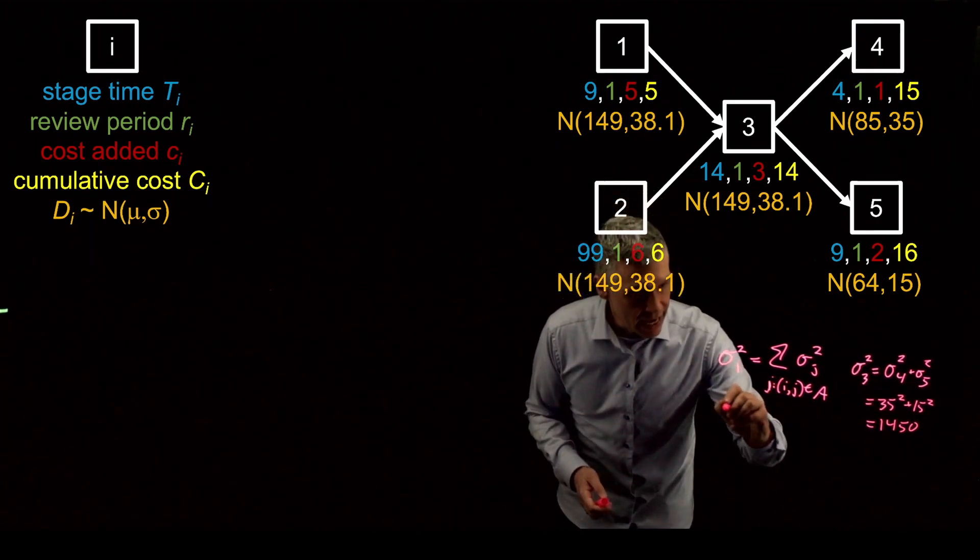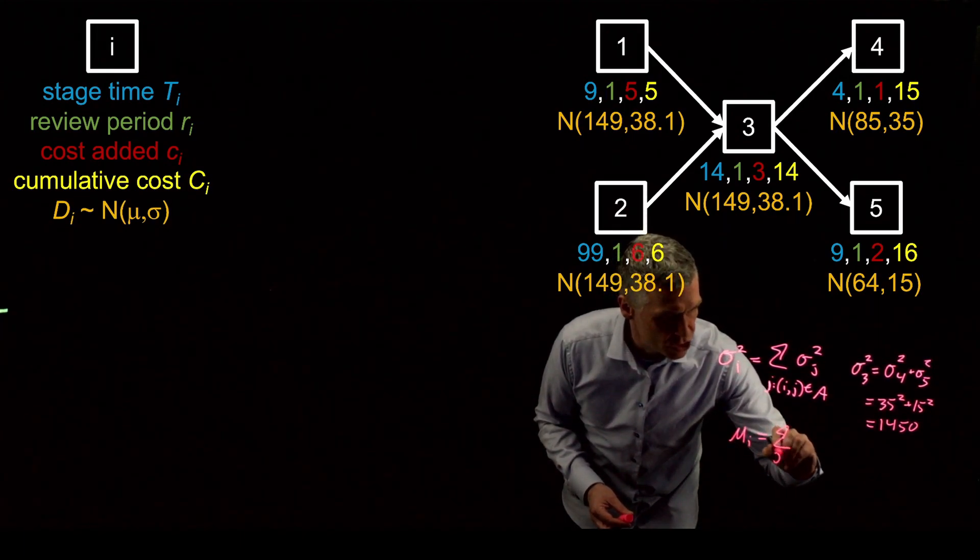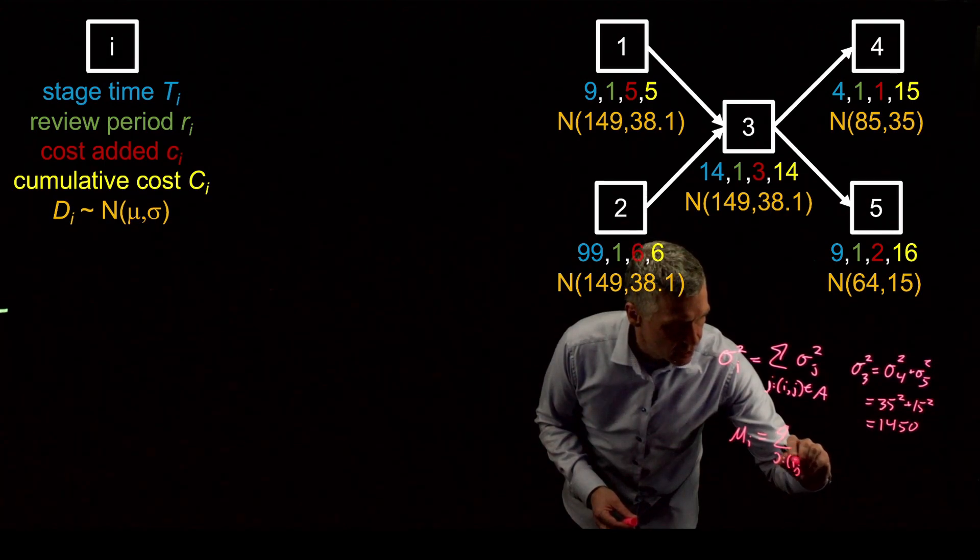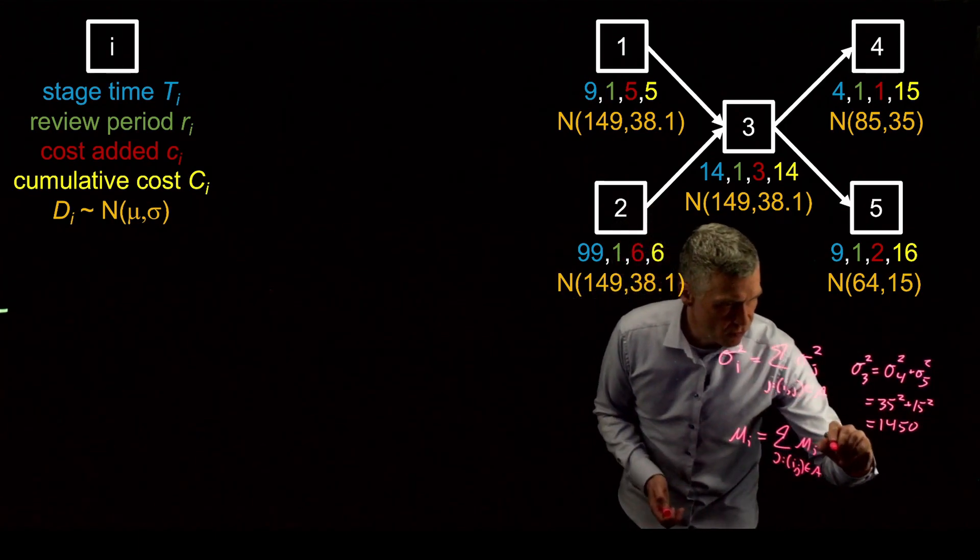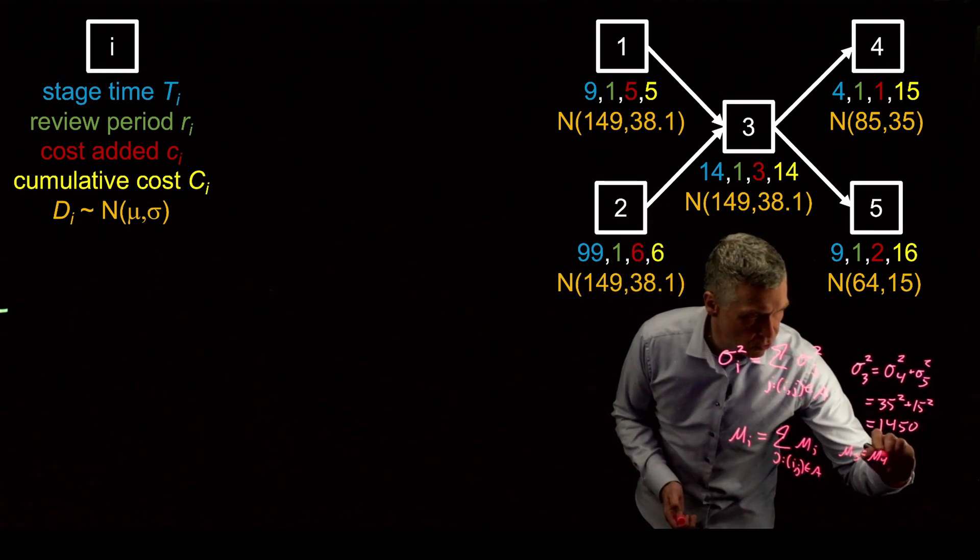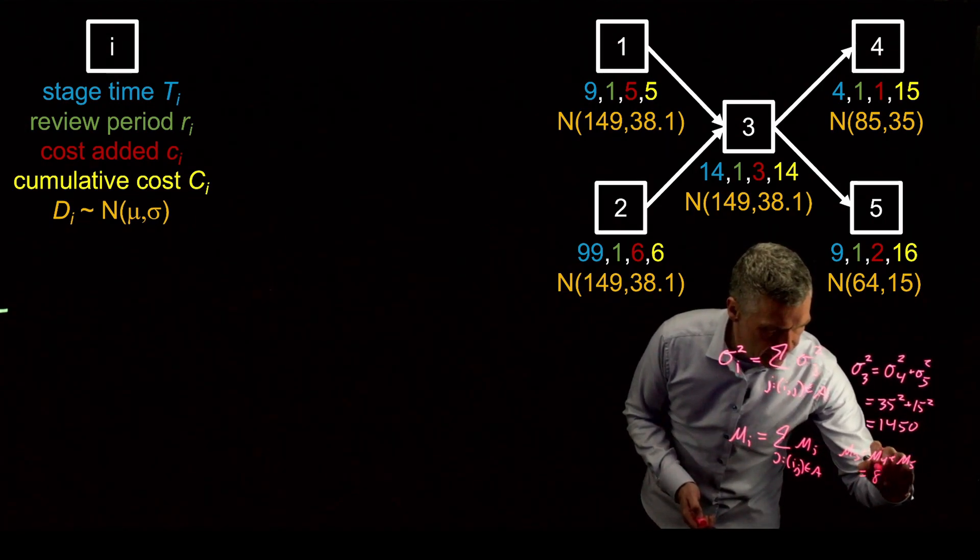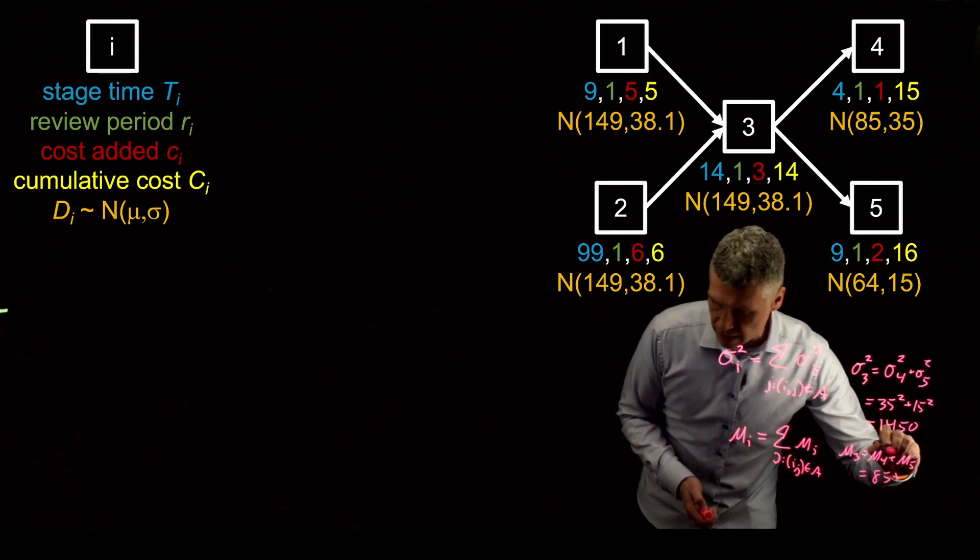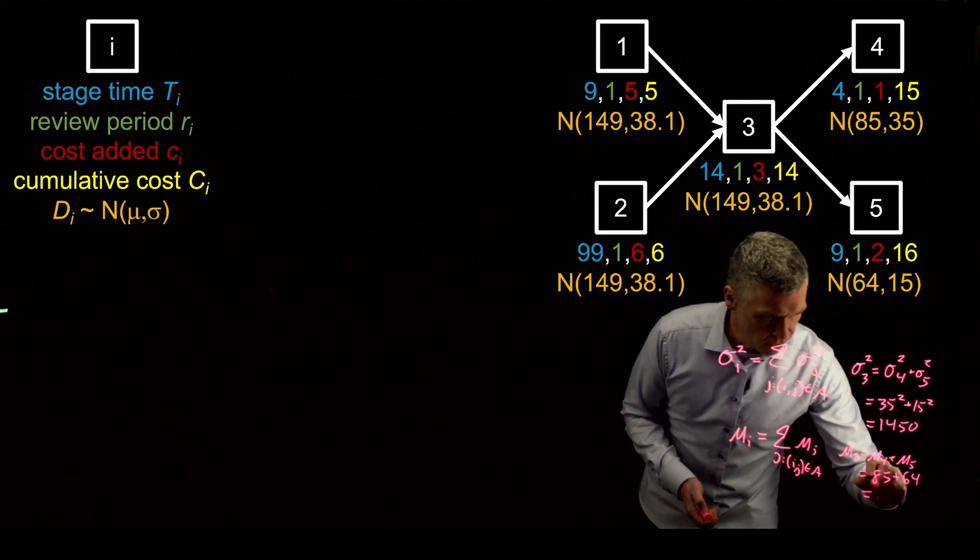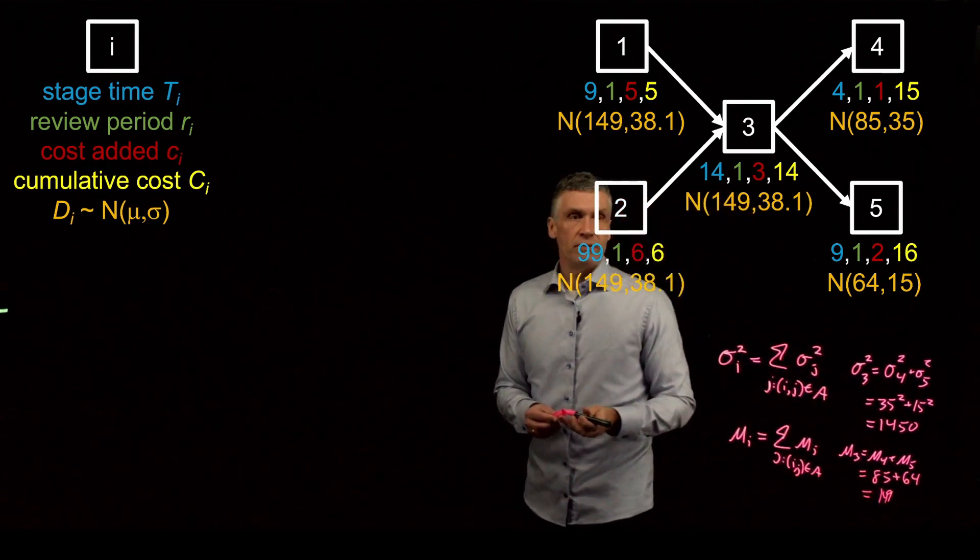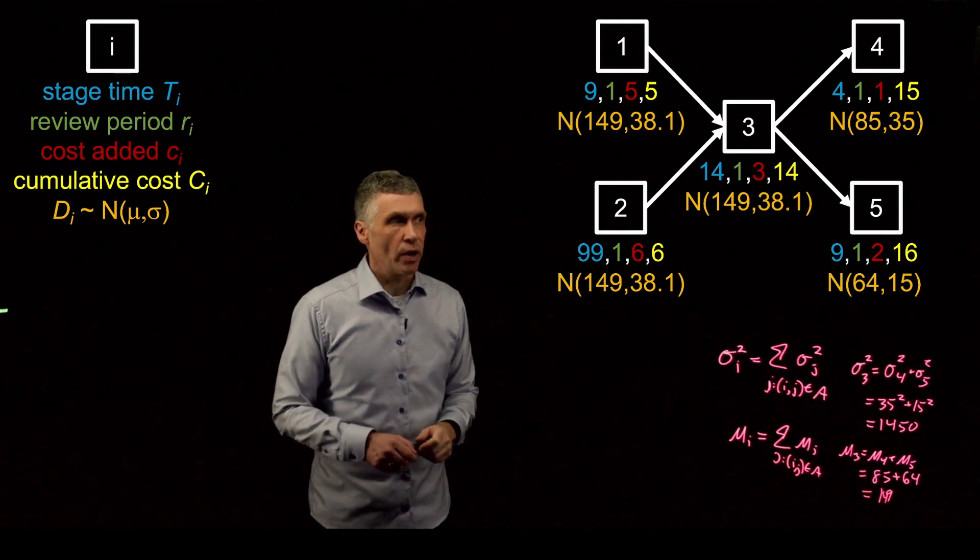The standard deviation is going to be the square root of the variance for each of the stages. The average value, mu i is just the sum over j such that ij is in A of mu j, and so for mu three, that's just going to equal mu four plus mu five, and those values are just 85 plus 64, and that equals 149. And that's exactly what we see here, that this is 149, and the square root of 1450 is 38.1. So, we transmit the variance and the mean backwards through the network. Demand transmits this way.